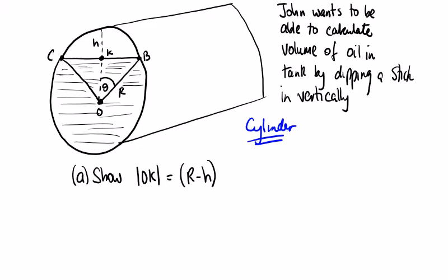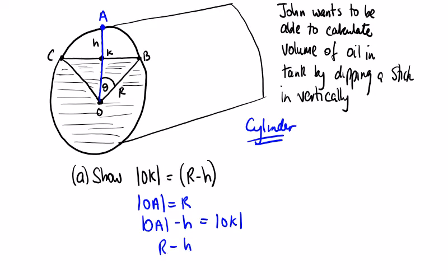Part A is easy enough — just show that OK is equal to R minus H. These are all R, so if I color this line in blue, that's R. It gives this another letter — let's call this A. We can say that OA is equal to the radius R, and OA minus H is equal to OK. So R minus H is equal to the same length as OK.